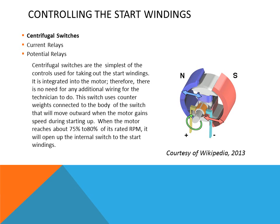The centrifugal switch is the simplest type — it uses a mechanical action with counterweights that use centrifugal force to move linkages inside the motor, opening up the start windings when the motor reaches full speed. As soon as the motor slows down or stops, the switch will close again.